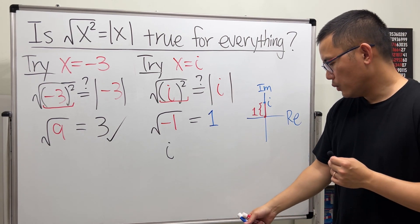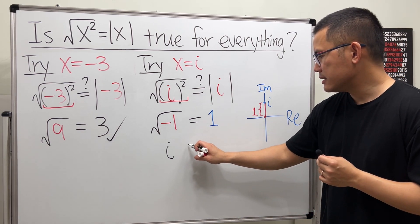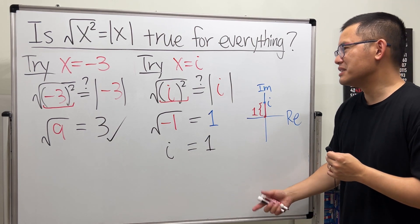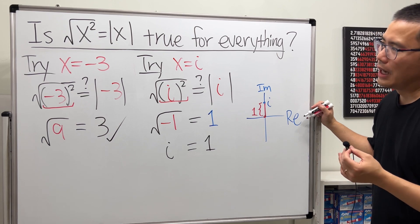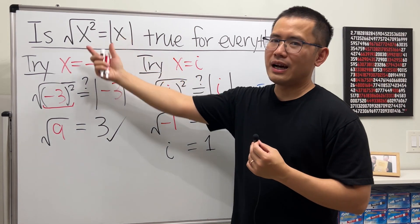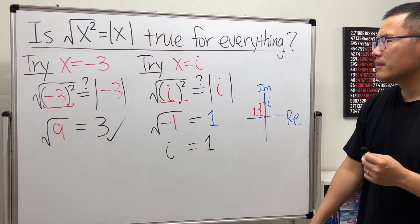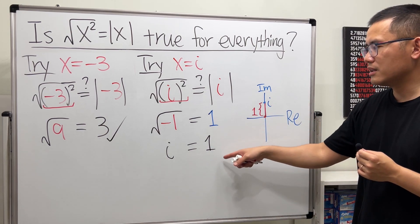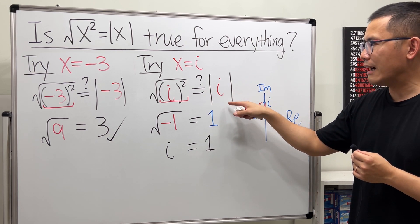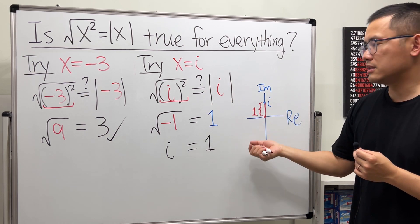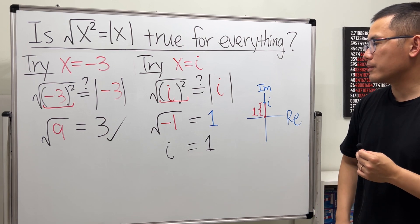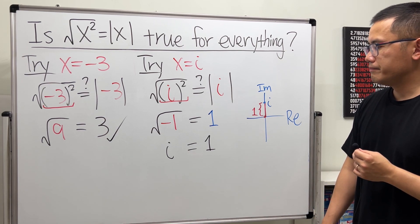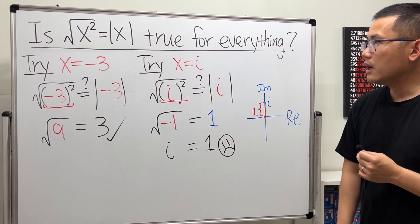Then we get i is equal to one. That doesn't look right. So as you can see, the equation that we have been, well I should say the formula or the way we simplify this that we have been using, it's not really true for complex numbers, because when you have the absolute value, you will have to talk about the distance from the origin to the complex number in the complex plane.